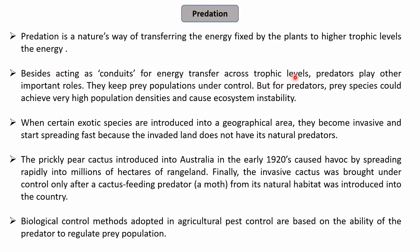Besides acting as conduits for energy transfer across trophic levels, predators also play other important roles. For example, they keep populations under control. If we consider a forest where rabbits are present but tigers are absent, the area may become overpopulated with rabbits, as there is no predator to keep the population under control. Therefore, predators, besides acting as conduits for energy transfer, play the important role of keeping prey populations under control.